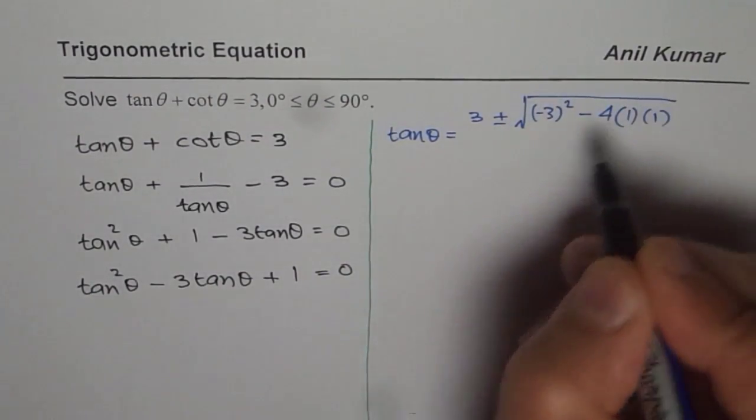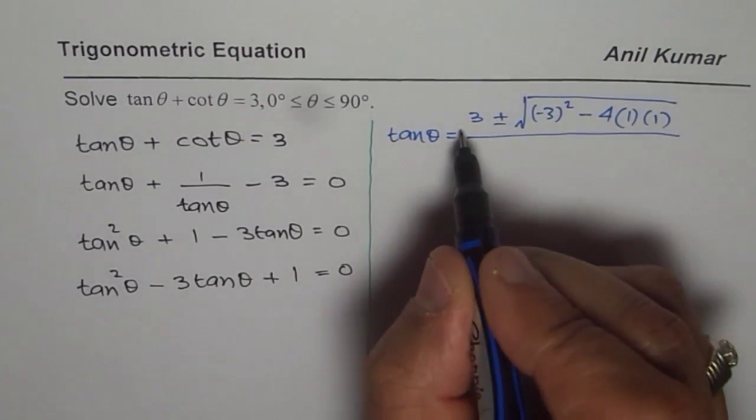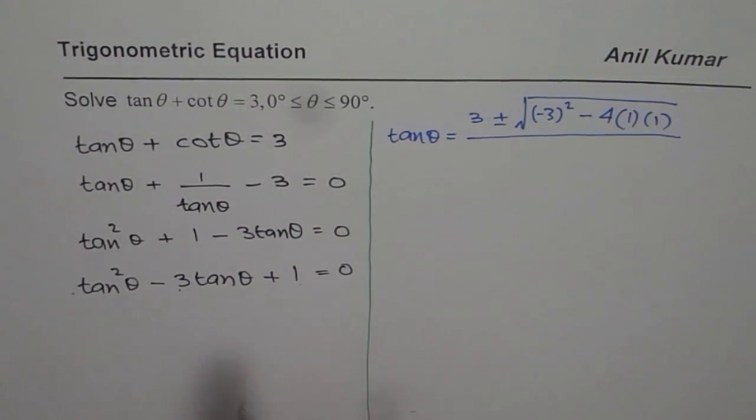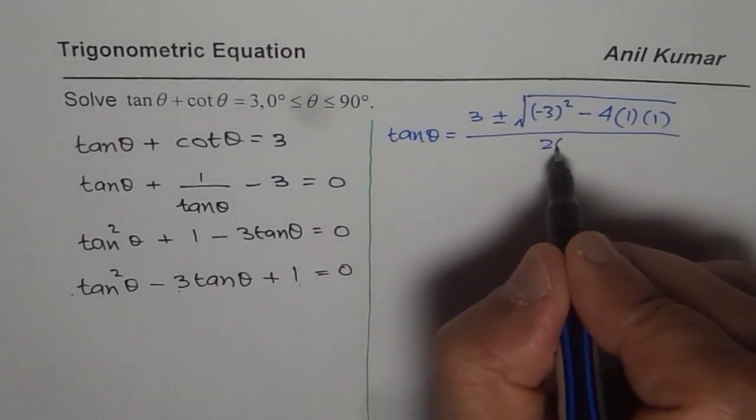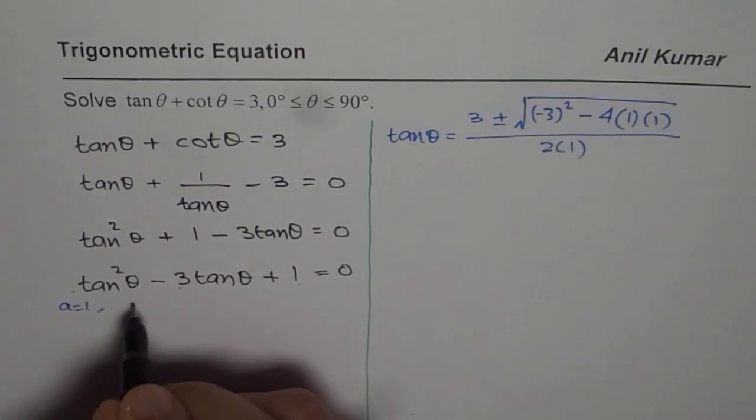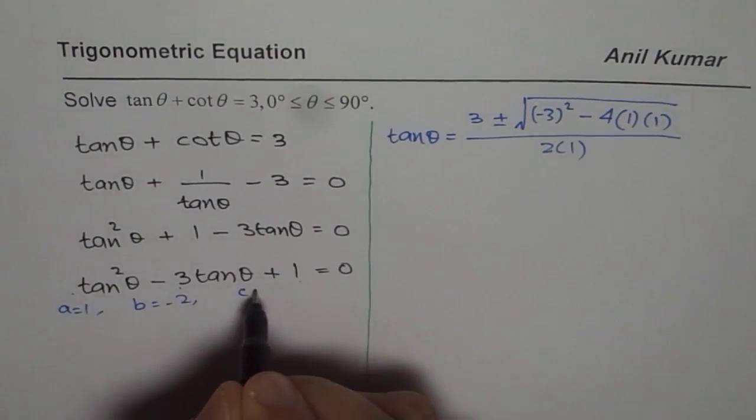So I hope you remember it. It is minus b plus minus b square minus 4ac. a is 1, b is minus 3, c is 1, divided by 2 times a which is 1. So in this case a is 1, b is minus 3, and c is 1.